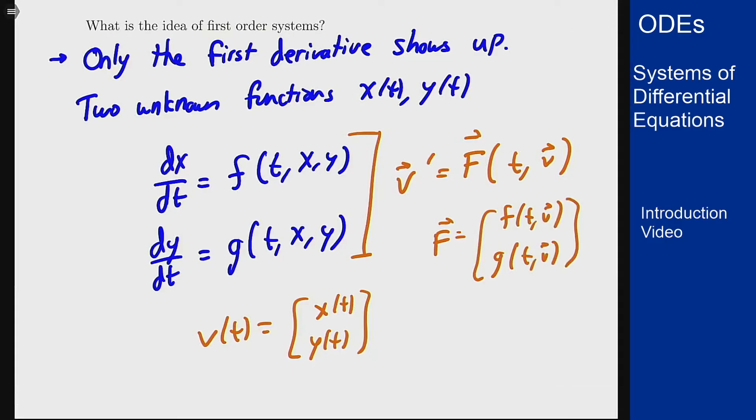We can use vectors to sort of stack all this together and you think about this, if you ignore all the vector notation, this here looks a lot like our first order equations in general. We have a derivative on one side equals some function f of the independent variable t and the function itself v. So this looks like our first order equations from before and that's the model we have for our first order systems.